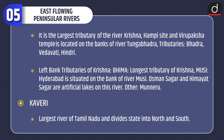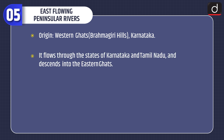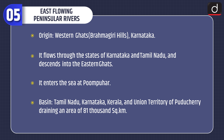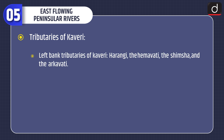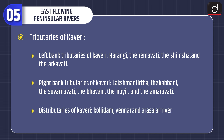Kaveri is the largest river of Tamil Nadu and divides the state into north and south. Origin: Western Ghats, Brahmagiri hills, Karnataka. It flows through Karnataka and Tamil Nadu, descends into the Eastern Ghats, and enters the sea at Poompuhar. Basin: Tamil Nadu, Karnataka, Kerala and the union territory of Puducherry, draining an area of 81,000 square kilometers. Left bank tributaries: Harangi, Hemavati, Shimsha and Arkavati. Right bank tributaries: Lakshmana Tirtha, Kabini, Suvarnavati, Bhavani, Noyil and Amravati. Distributaries: Kollidam, Vennar and Arasalar.